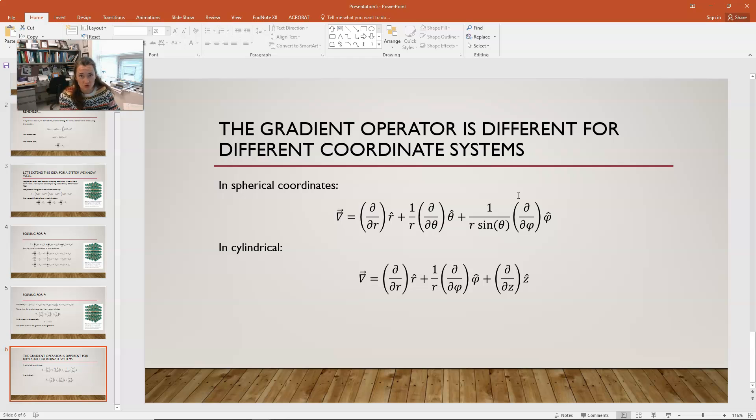In cylindrical coordinates, the gradient operator is partial with respect to r, r hat, plus 1 over r, partial with respect to phi, phi hat, plus partial with respect to z, z hat. So, that's the gradient operator in cylindrical coordinates.